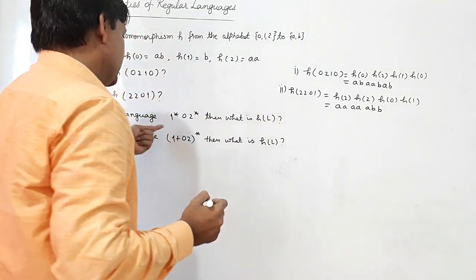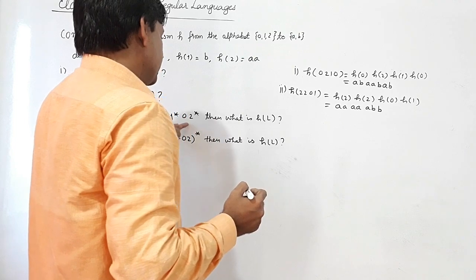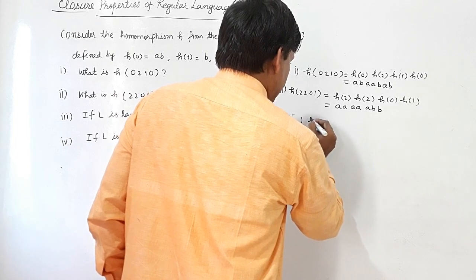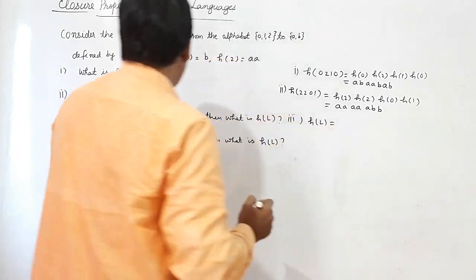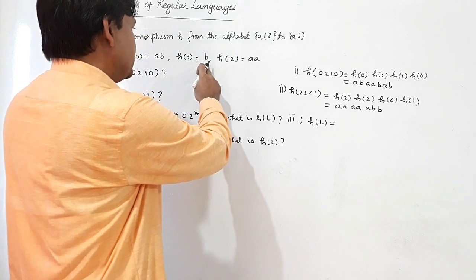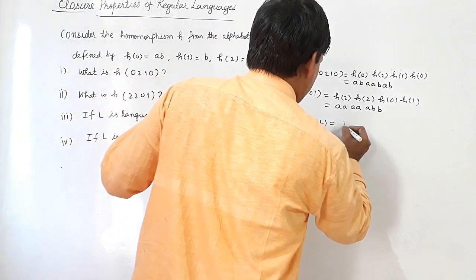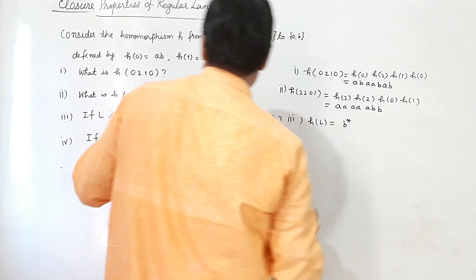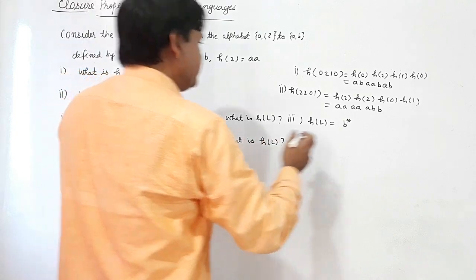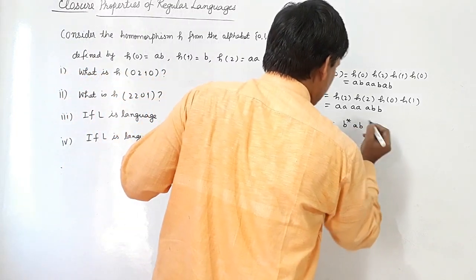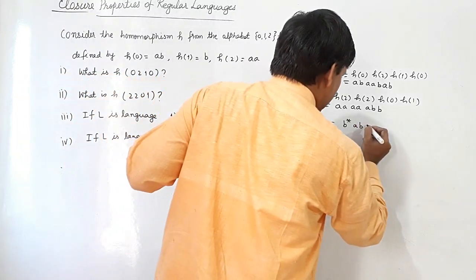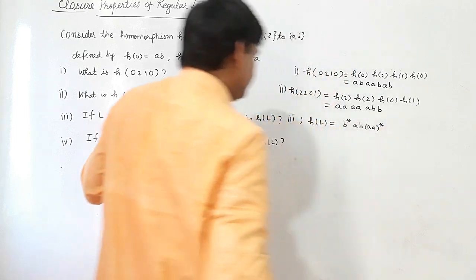For the third part, if L is the language denoted by 1*·0·2*, then H(L) is found by substituting: in place of 1 write H(1) = B, so 1* becomes B*; in place of 0 write H(0) = AB; and in place of 2 write H(2) = AA, so 2* becomes (AA)*. Therefore H(L) = B* · AB · (AA)*.